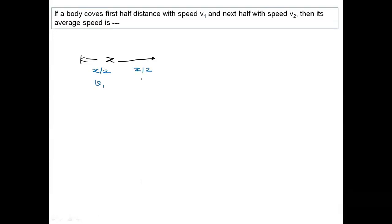Next half distance with speed v2. I have to calculate the average speed. Again, I know the formula: average speed is given by total distance upon total time.